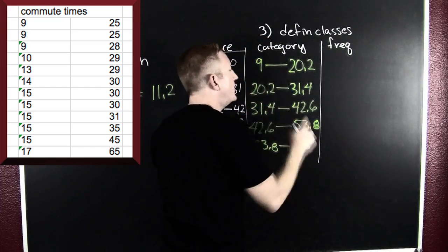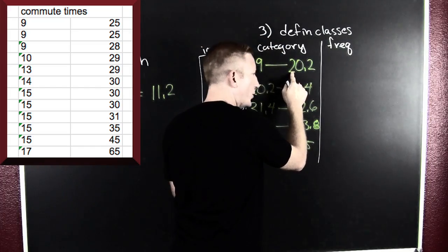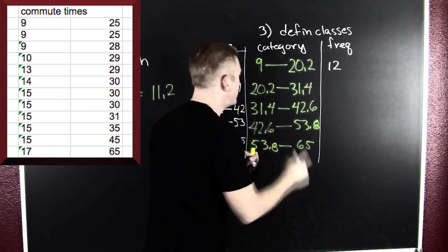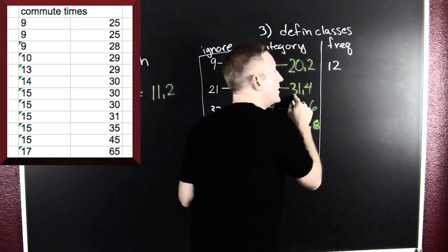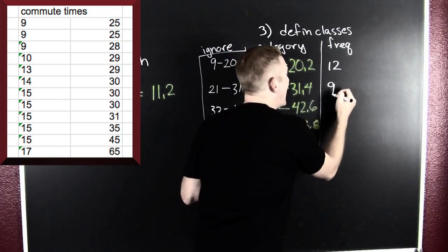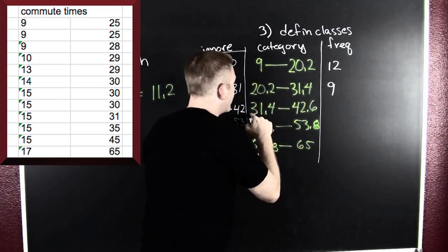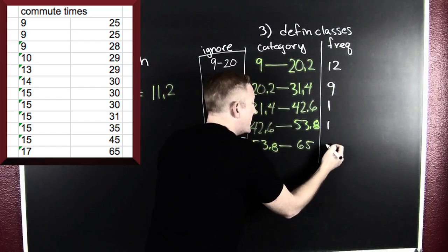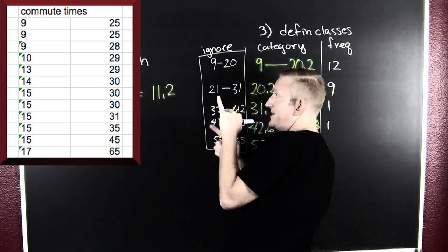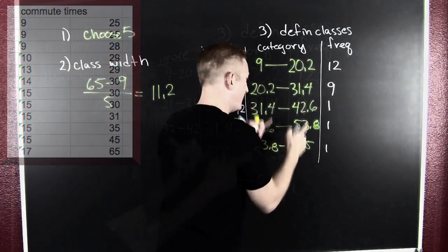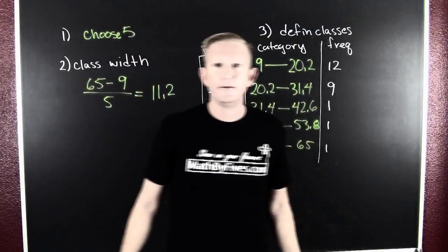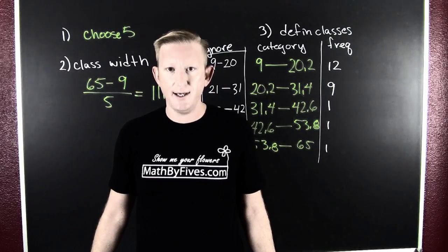And this is the frequency. So, in the 9 to 20.2 category, we have 12 people commuting in that fashion. And then from the 20.2 to the 31.4, we're going to have 9 people. From 31.4 to 42.6, we have 1. And then it looks like we have another 1 and another 1. Because I'm using that data up there. And I'm placing them in them categories right there. And now I have enough to make my frequency histogram.